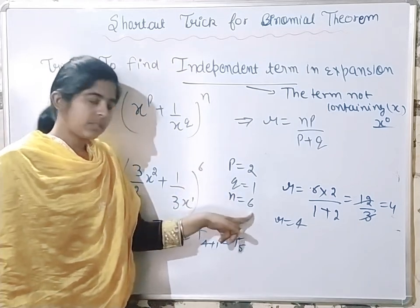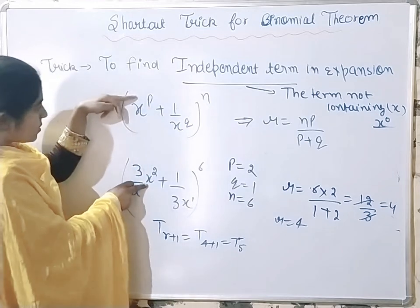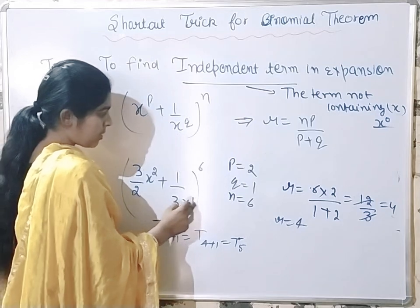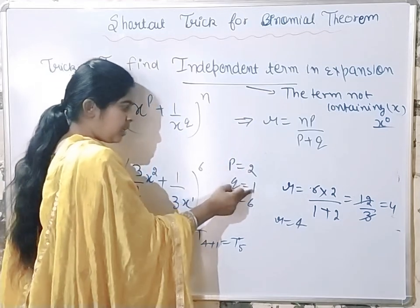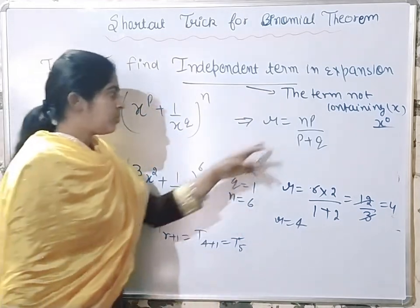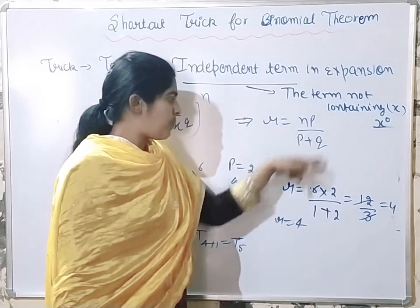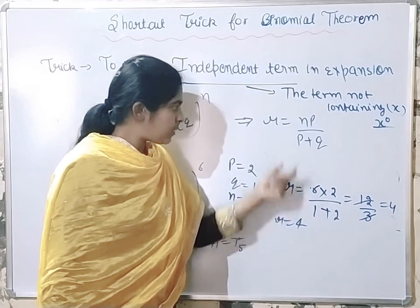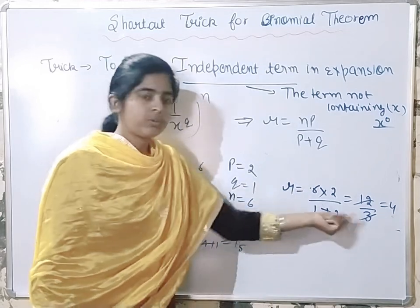We can identify x to power p, that means p is 2. 1 upon x to power q means q is 1. Now put here r equals to np upon (p plus q): n is 6, p is 2, so 6 times 2 divided by 2 plus 1 equals 3, and we get r equals 4.